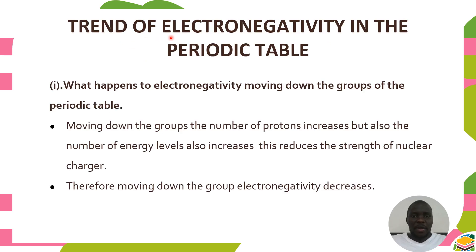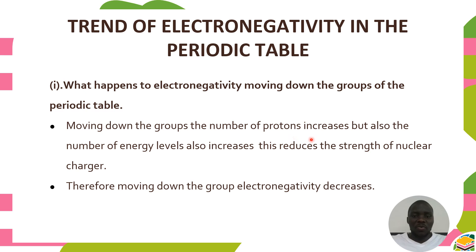What happens to electronegativity moving down the group of the periodic table? As we move down the group, the number of protons increases — increasing nuclear charge — but the number of energy levels also increases, causing high shielding of the inner electrons from the outermost electron. This reduces the effective nuclear charge. Therefore, moving from top to bottom of the group, electronegativity decreases, because the atom has weak effective nuclear charge and cannot attract the shared electrons strongly.